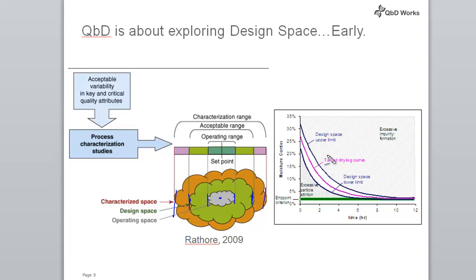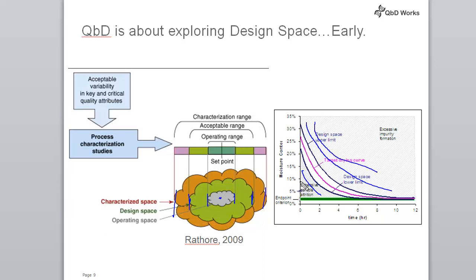In the actual characterization stage, we would have done more studies — some going into the acceptable range, and if we had done further studies, that's where the failure point would be, and that would represent the characterization range.